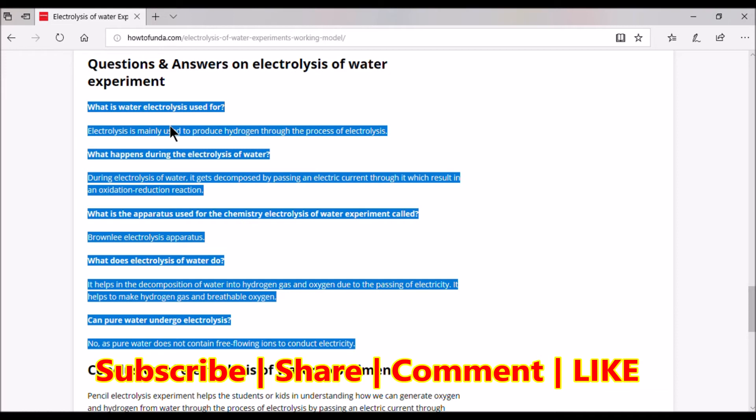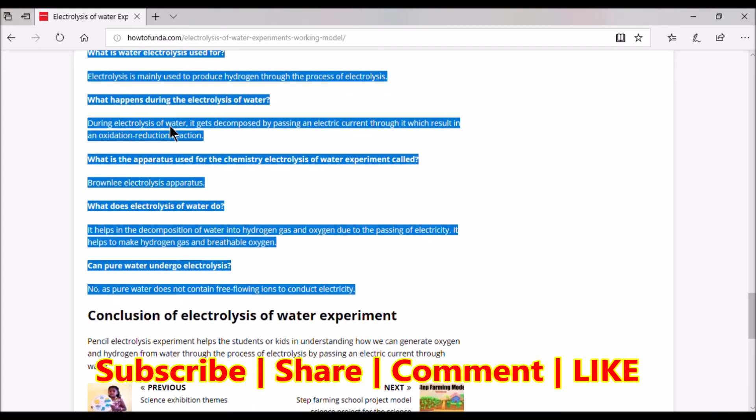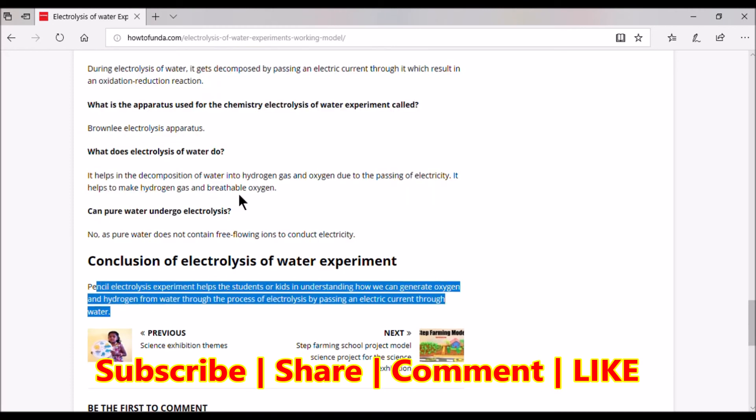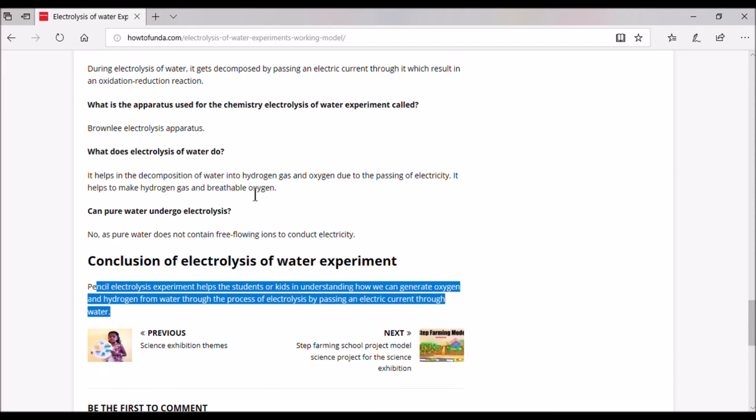Once you are able to answer all the questions and queries which your teacher, principal, or your friends have, then you should conclude the model explanation. We have provided the conclusion as well. With this experiment students can easily understand how you can generate oxygen and hydrogen from water. The whole process of splitting oxygen and hydrogen by using electric current through the water is called electrolysis of water.